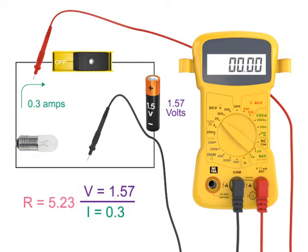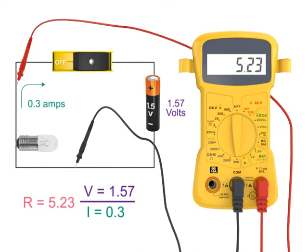Let's check the actual resistance of the light bulb using the meter. Make sure the switch of the circuit is open or in the off position so no external power is in the circuit. Look for the ohm symbol, which is the Greek letter omega, and switch the meter to 200. Now, place the leads on either side of the light bulb. You should see a reading of 5.23 ohms.